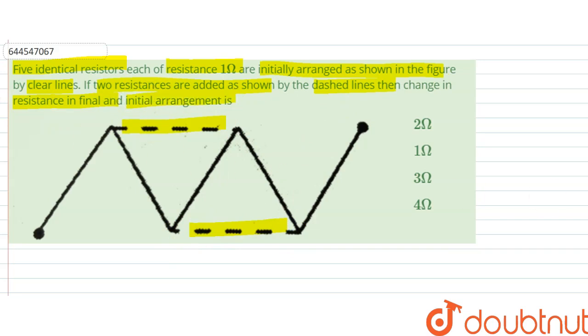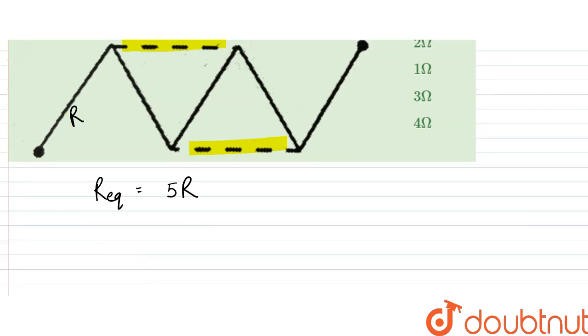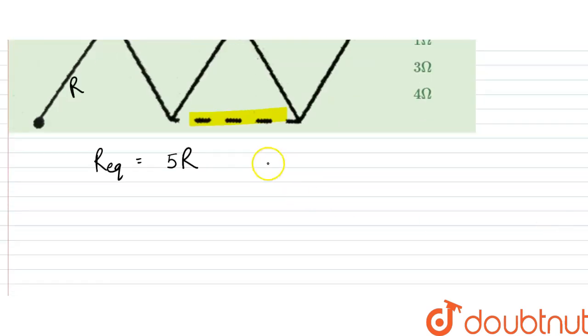Initially, the equivalent resistance would be, since they are in series, the resistance was 5R. If the resistance of each resistor is R, let's say, and each resistor is 1Ω, then since R is 1Ω, we can write that R equivalent initially, so from here...